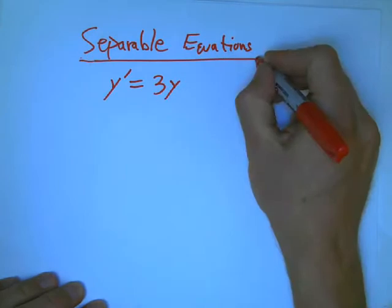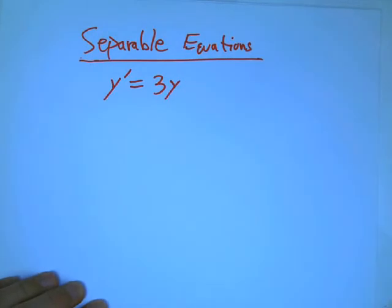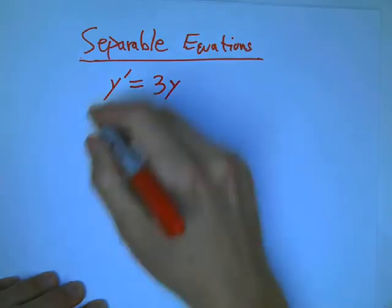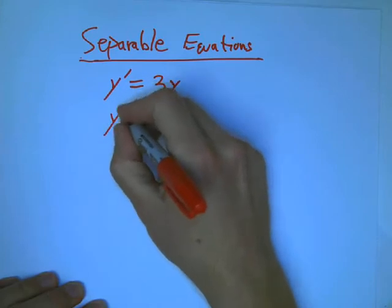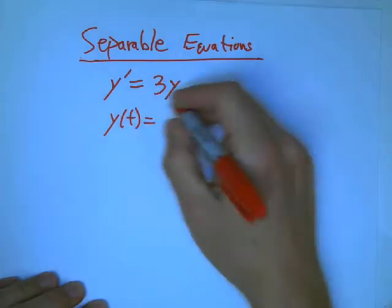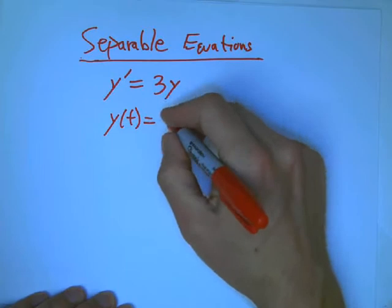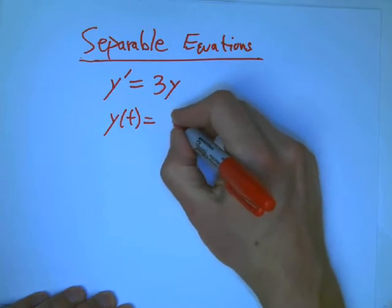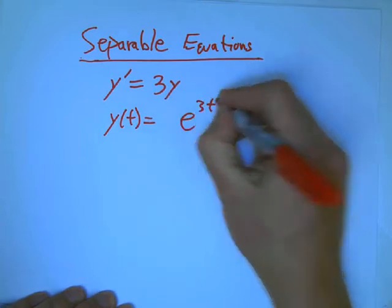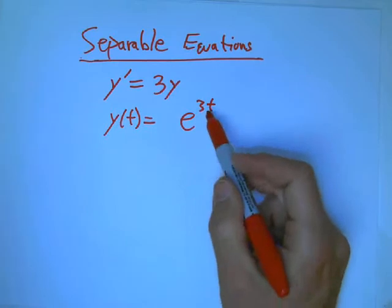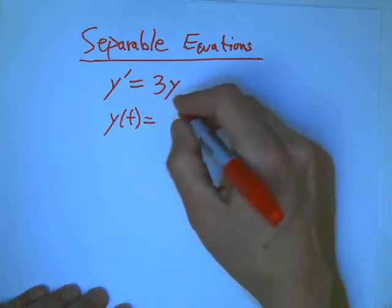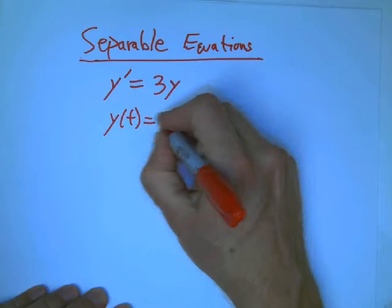And if you refer back to an earlier video, we actually figured out the solution to this already, and that was y of t. I'm going to use t for the independent variable. It's e to the 3t, because when you take the derivative of that, it's itself times the 3 factor with a chain rule, and in fact, any multiple of that works.